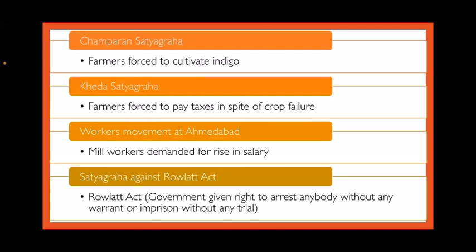Next is the workers' movement at Ahmedabad. During the First World War there was great inflation — a rise in prices. Mill workers demanded a rise in their salary but the mill owners did not accept this. According to Gandhiji's advice, the workers went on a hunger strike, and finally the mill owners had to back off and the salary of workers was increased.